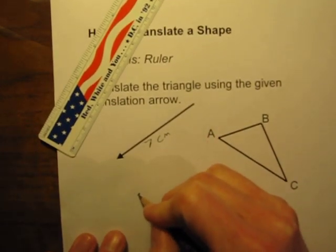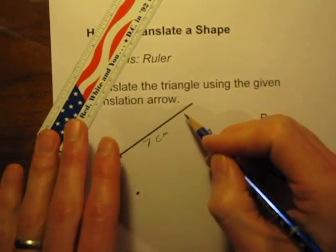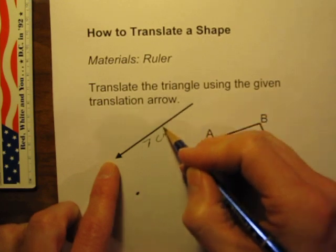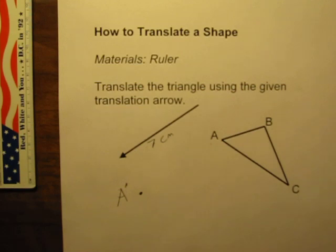And so seven centimeters away from point A puts me right there. So this point right here is going to be my new point A after doing this translation. Going in this direction, seven centimeters, so this is my new A or my A prime.